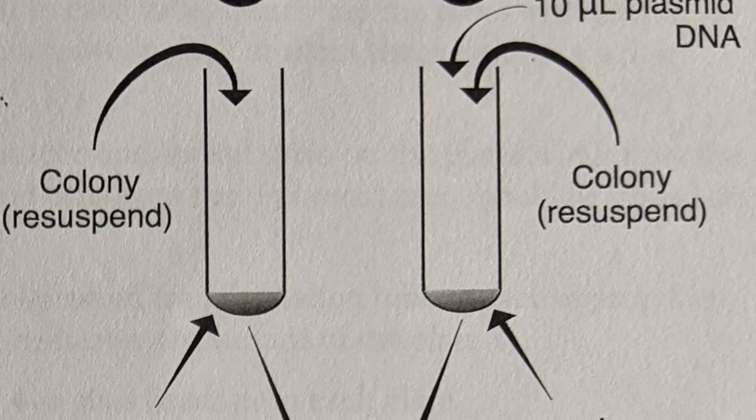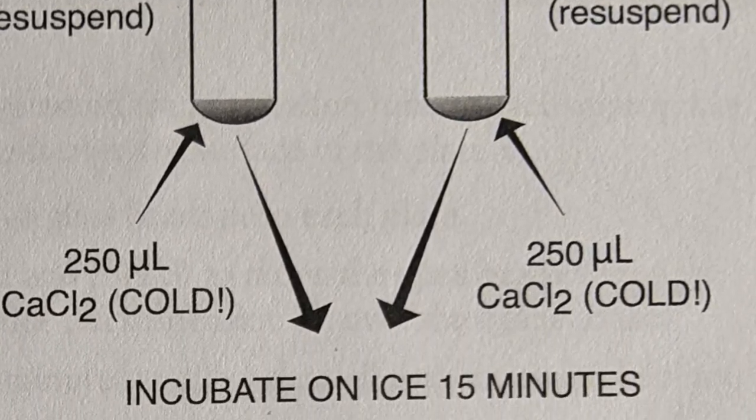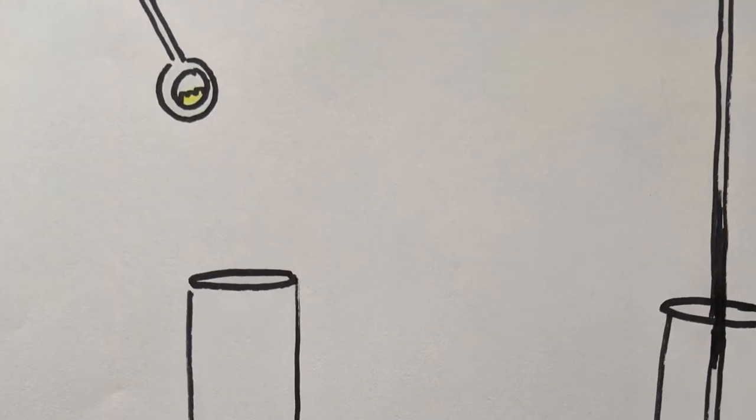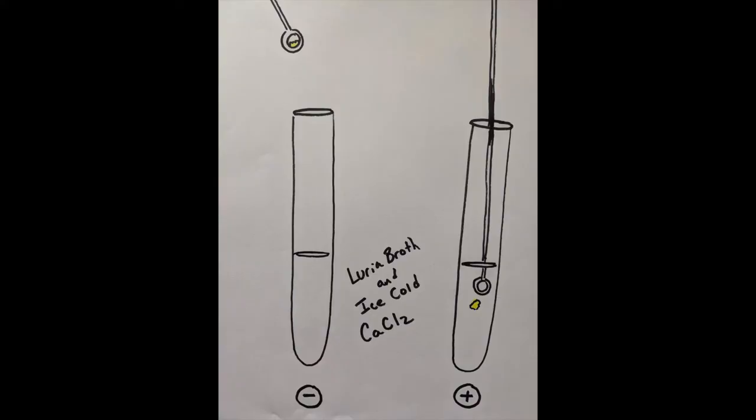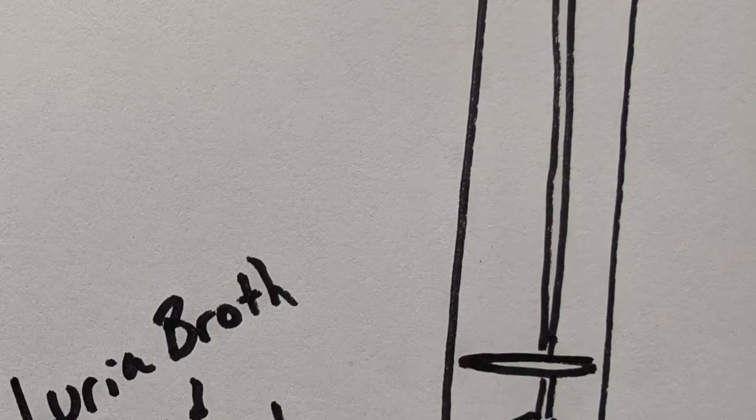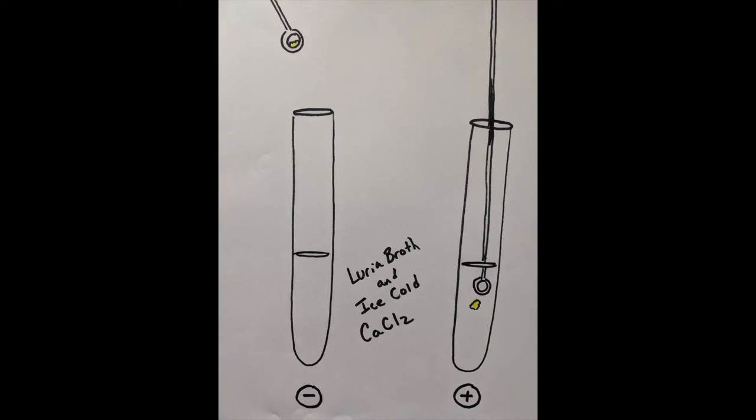We start by taking two test tubes and putting Luria broth and cold calcium chloride into each. We label the first test tube minus and the second plus. We grab an isolate on an inoculating loop and put it into the minus test tube with the calcium chloride, then take another cluster of bacteria from another isolate and put it into the plus labeled test tube. We spin the inoculating loop to ensure bacteria enter the test tube, then use a sterile pipette to slosh it around until the calcium chloride is cloudy with suspended bacteria.